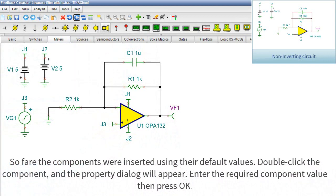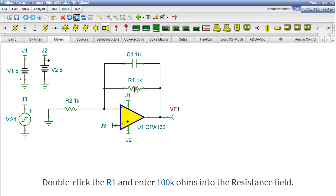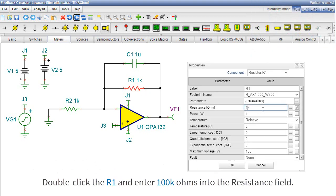So far the components were inserted using their default values. Double-click the component, and the Property dialog will appear. Enter the required component value, then press OK. Double-click the R1, and enter 100k ohms into the resistance field.